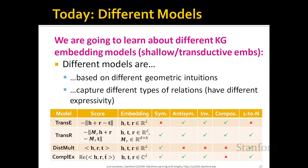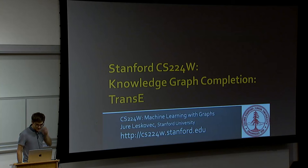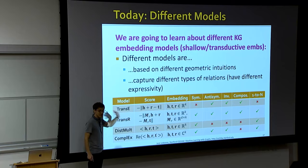We will talk about four different methods: TransE, TransR, DistMult, and ComplEx. We are going to look at different types of relations: symmetrical relations, anti-symmetric relations, inverse relations, composite relations, and one-to-N relations. We will see how each method is able to embed different types of relations. The rest of the lecture will go through a table line by line and fill in check marks and crosses for each method and relation type.